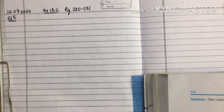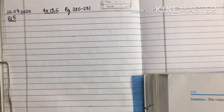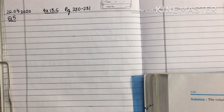Good morning, 9th standard. We are doing Exercise 13.6 from your NCERT book — Chapter 13, Surface Areas and Volumes. Exercise 13.6 is based on the volume of a cylinder. We have already done a few questions; let us do the remaining ones.